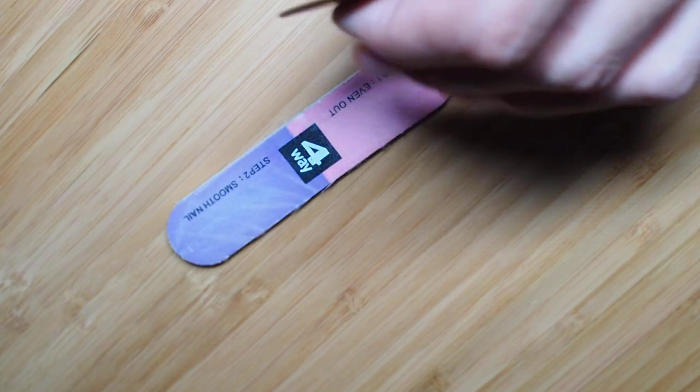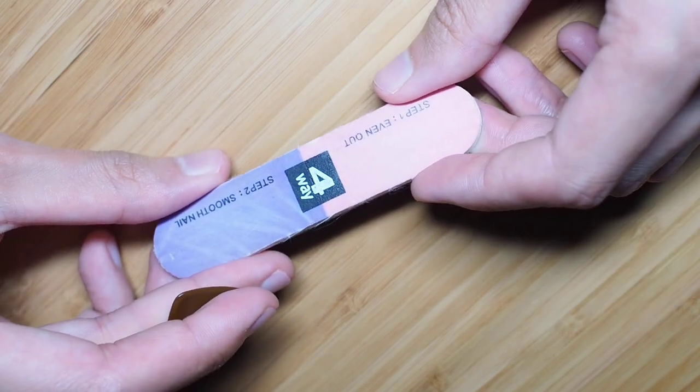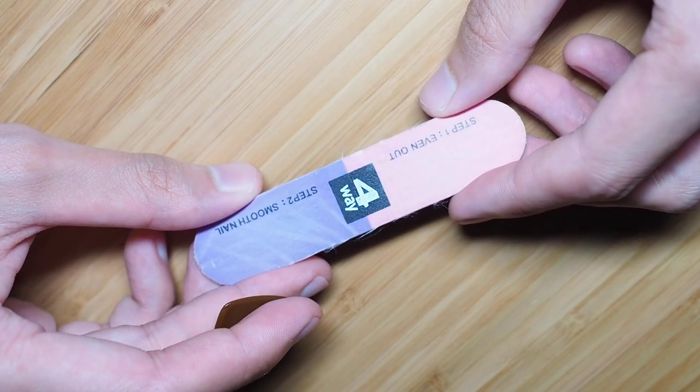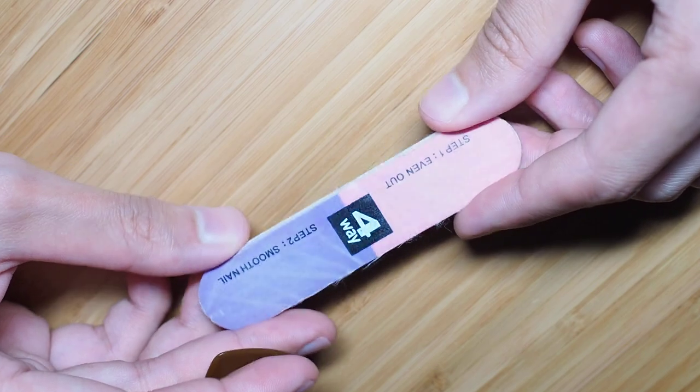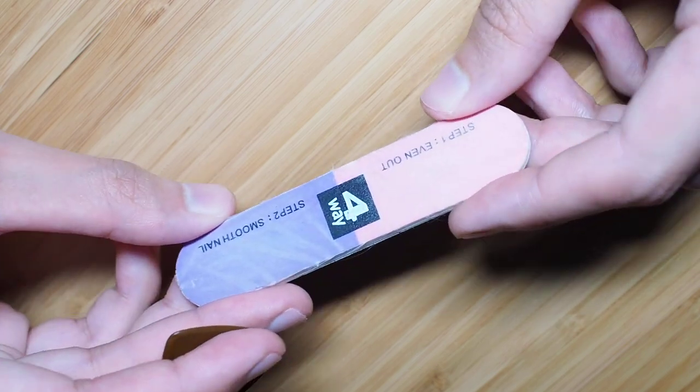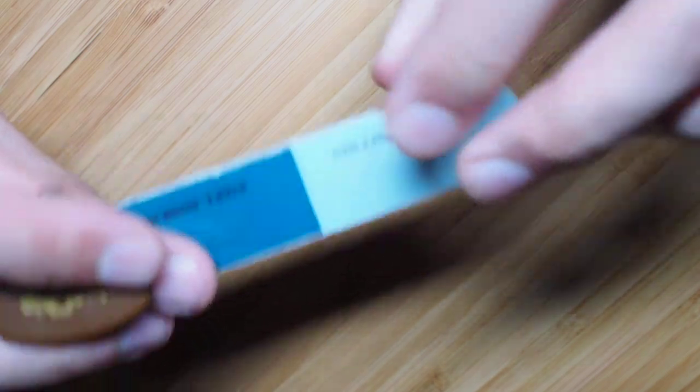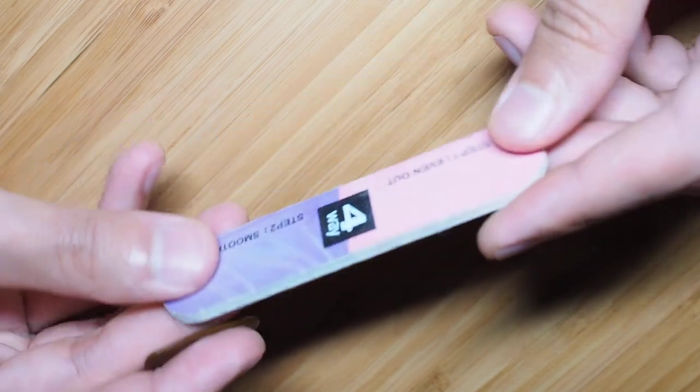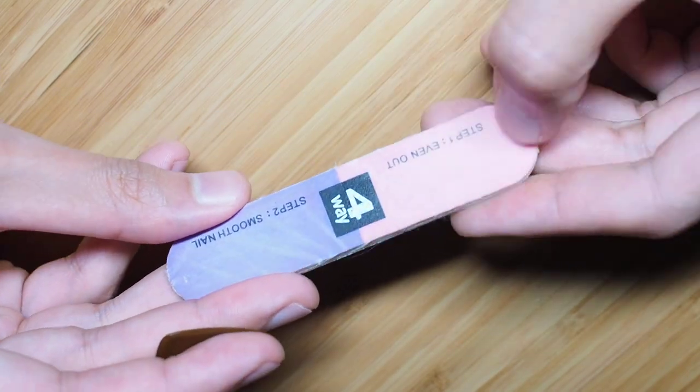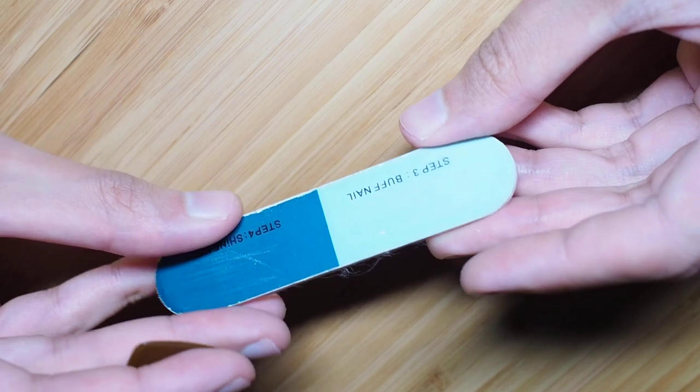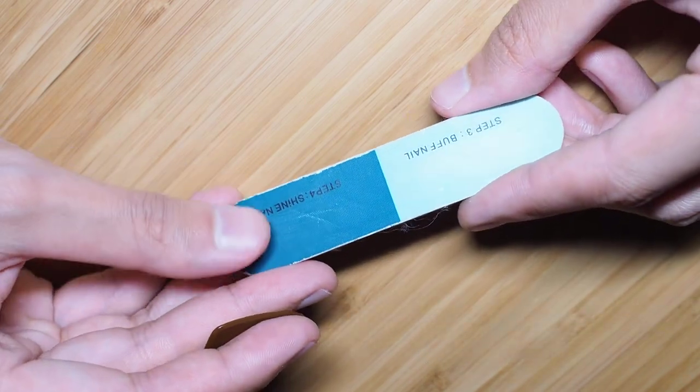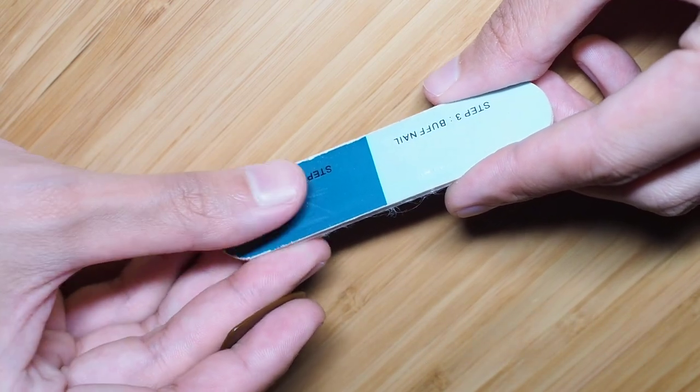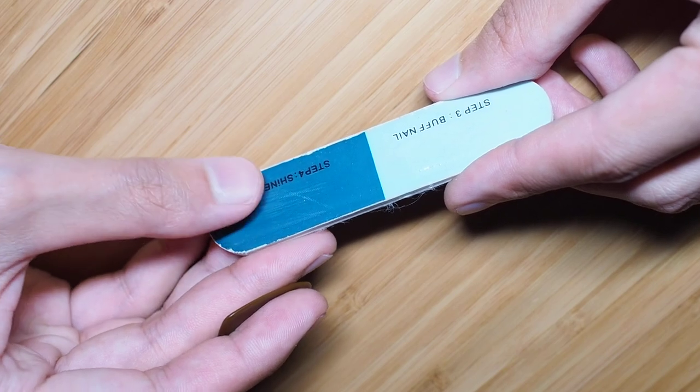Okay, so let's just get started on that. This thing here I literally got from the Dollar Tree or something. And it has four different grits. There's this kind of rougher grit and it goes all the way to this step four shine, which is basically just to buff it out to make it really smooth.